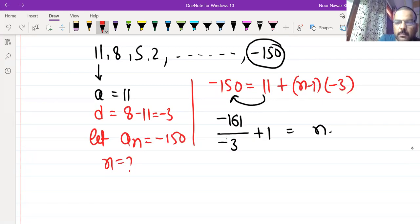Minus minus, then cancel it. Now 161, 3 will not divide. So 3 will be 3.